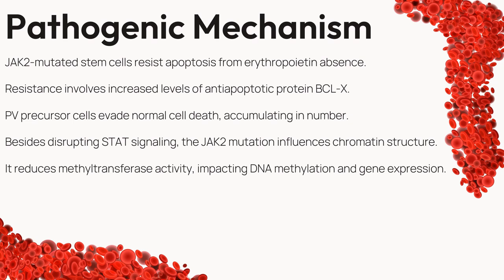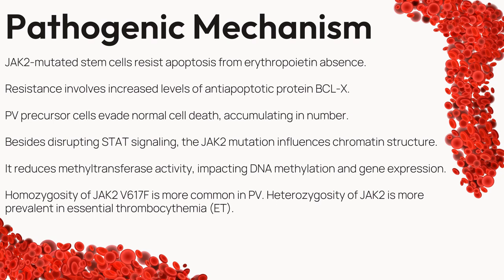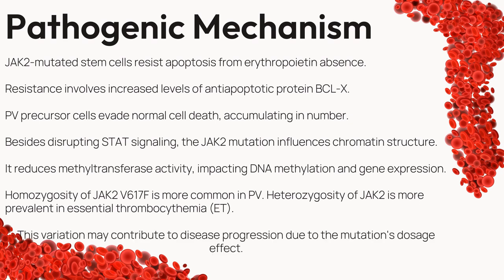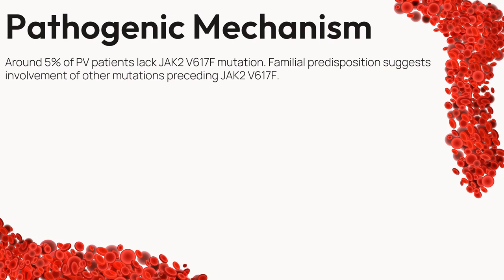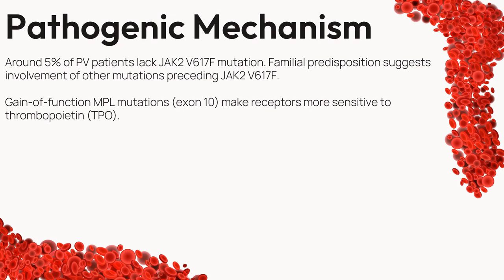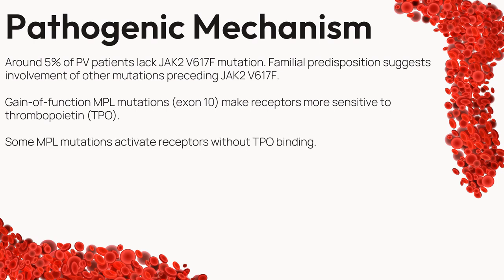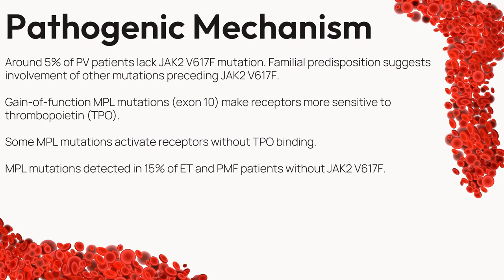The impact of the JAK2V617F mutation varies across PV and other myeloproliferative disorders, with variation in homozygosity and heterozygosity potentially influencing disease progression. Around 5% of PV patients lack the JAK2V617F mutation, suggesting a familial predisposition and hinting at mutations that precede it. Gain-of-function mutations in MPL exon-10 hold a significant role, rendering receptors more sensitive to thrombopoietin (TPO) — a key player in platelet production — and some MPL mutations even activate receptors independently of TPO binding. These MPL mutations are detected in 15% of ET and PMF patients who lack the JAK2V617F mutation.